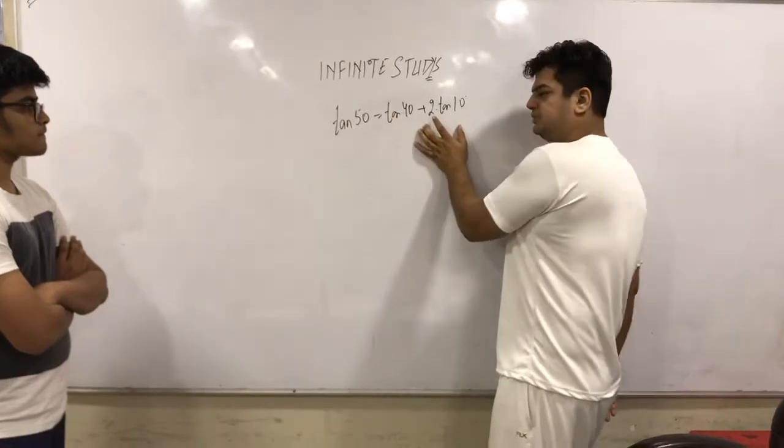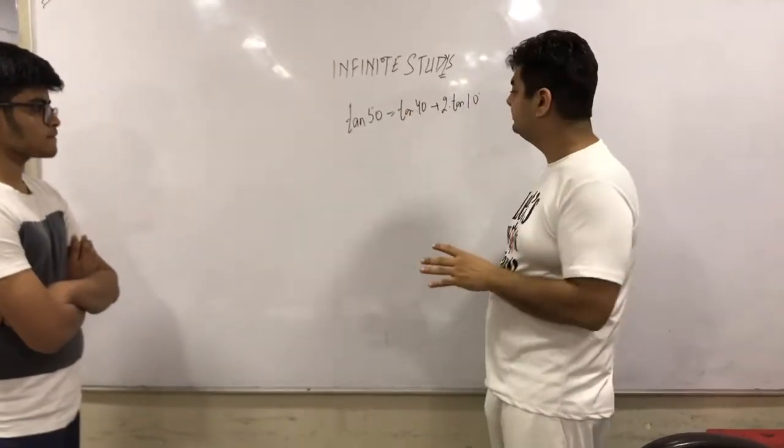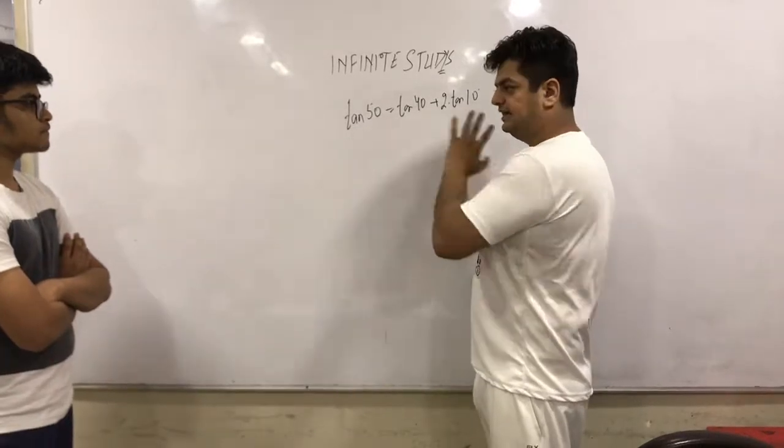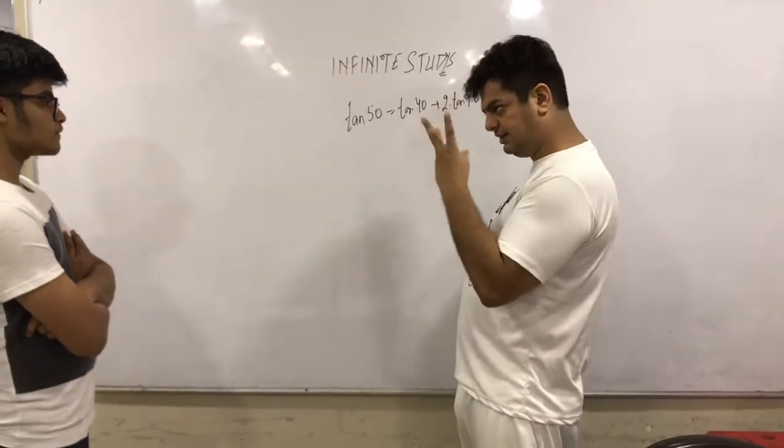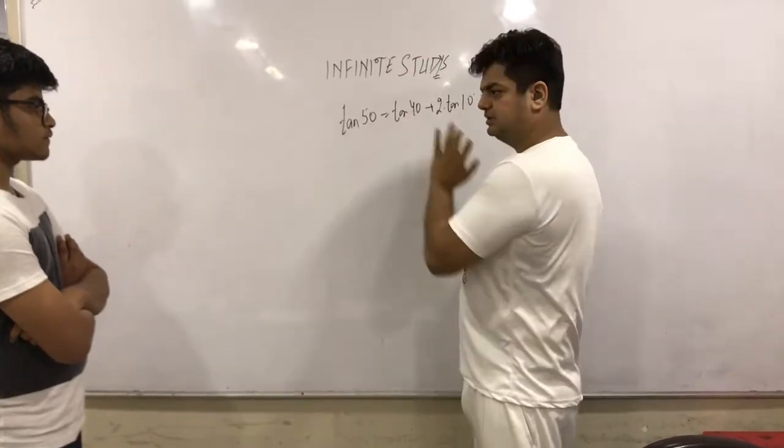Tan 50 is equal to tan 40 plus 2 tan 10. See, in such kind of questions, what you need to focus on is we have purely tan there, and we have 3 angles in which the sum of 2 angles happens to be the 3rd angle, right?